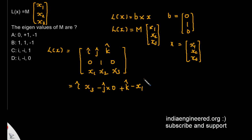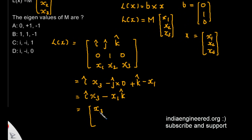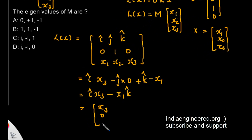That is i cap into x3 minus j cap into 0 plus k cap into minus x1. We can denote it in a matrix form: corresponding to i cap we have x3, corresponding to j cap we have 0, and corresponding to k cap we have minus x1.